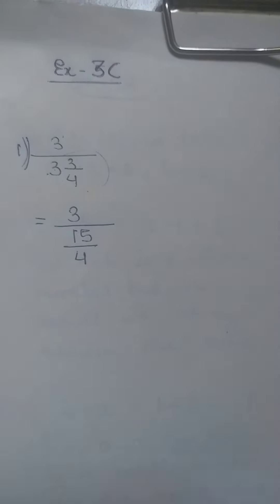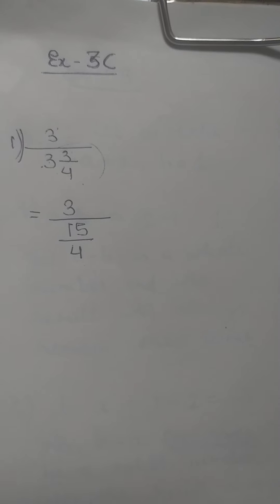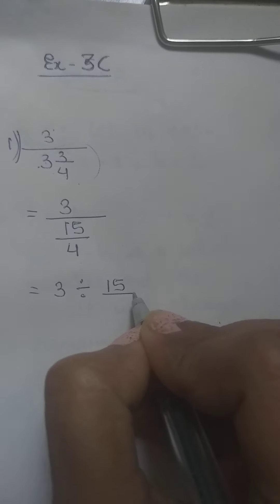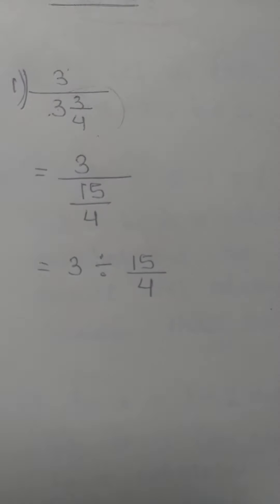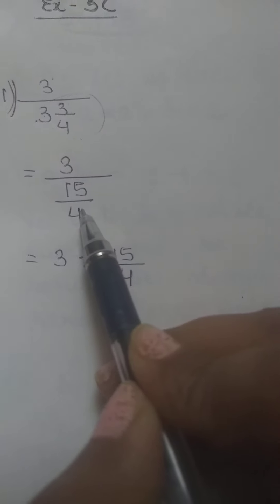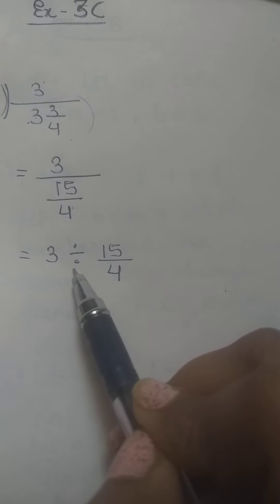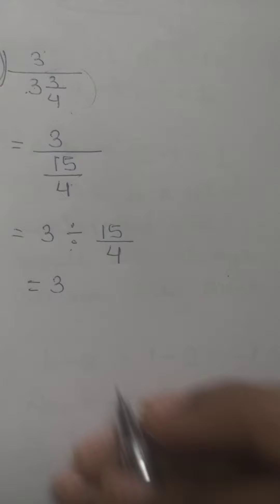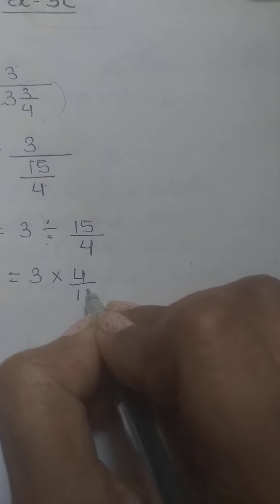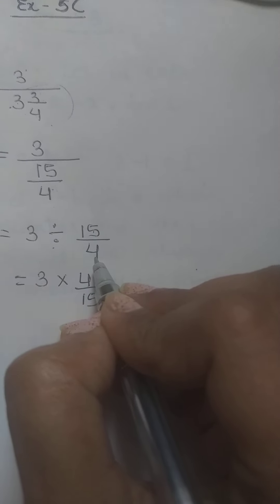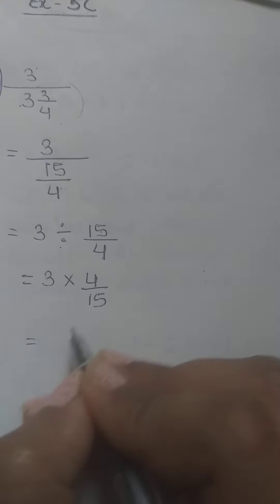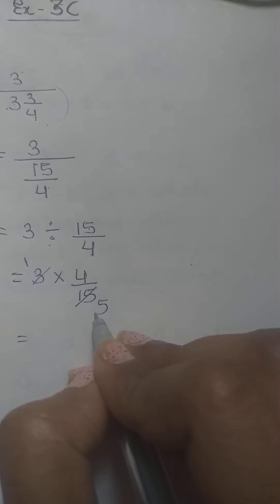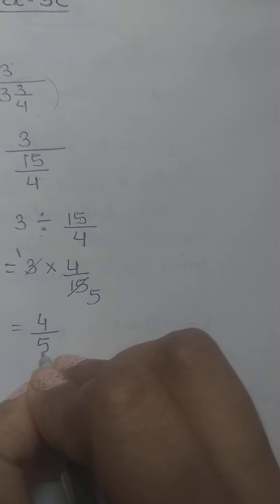So we get 15 by 4. Now I can write this as 3 divided by 15 by 4. Numerator upon denominator means divide. Now write the multiplicative inverse, or reciprocal, of the denominator: 4 by 15 instead of 15 by 4. Wherever cancellation is possible, just do it. 3 ones are 3, 3 fives are 15. The number left is 4 in the numerator and 5 in the denominator.